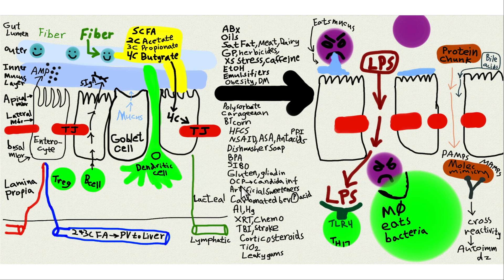Oral contraceptive pills can lead to increased risk of candida infections, which can cause leaky gut. Artificial sweeteners — in particular sucralose and stevia — are associated with leaky gut. They're all unhealthy and should be avoided. Carbonated beverages are thought to be associated with leaky gut because of the phosphoric acid.